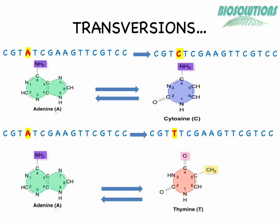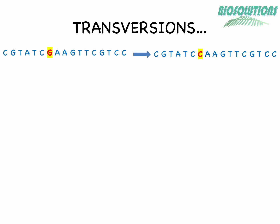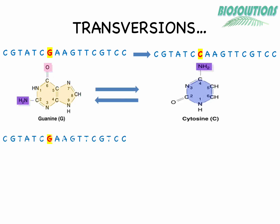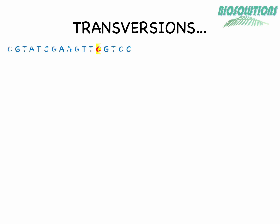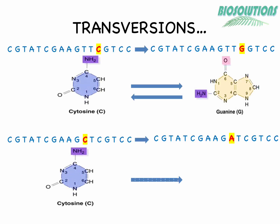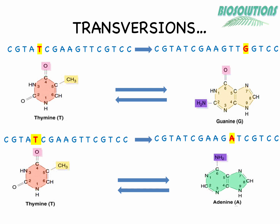On the other hand, if a mutation changes one purine to a pyrimidine, or a pyrimidine to a purine, this is called a transversion. Here, a one-ring structure changes to a two-ring structure or vice versa. There are eight possibilities of transversion: adenine may change to cytosine or thymine; guanine may change to cytosine or thymine; cytosine may change to guanine or adenine; and thymine may change to guanine or adenine.